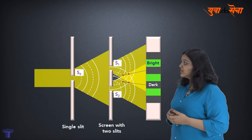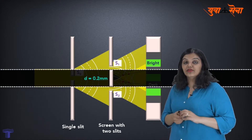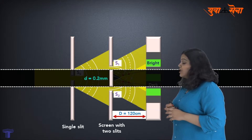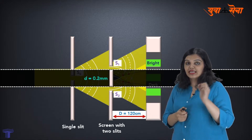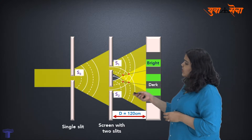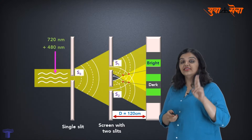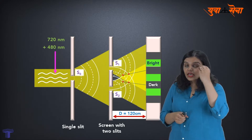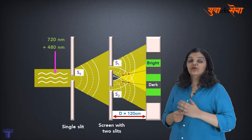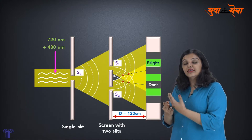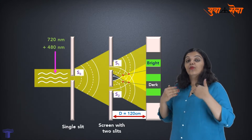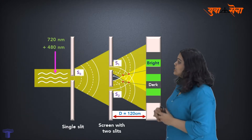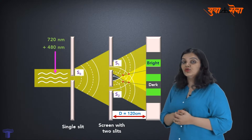What else have we been told in this problem? The distance between the slits is 0.2 mm, denoted by small d. The screen is 120 cm away, which is capital D. The incoming light has two wavelengths: 720 nm and 480 nm. Think about what is being asked: when will the bright fringe due to one wavelength coincide with the bright fringe due to the other? That's exactly what happens when you put both lights together.